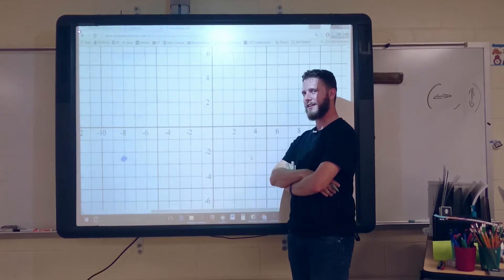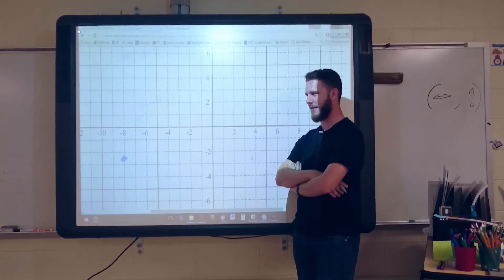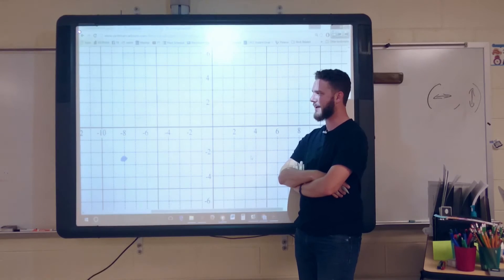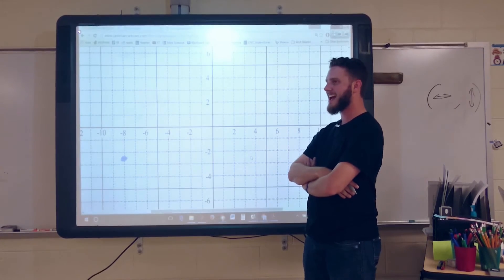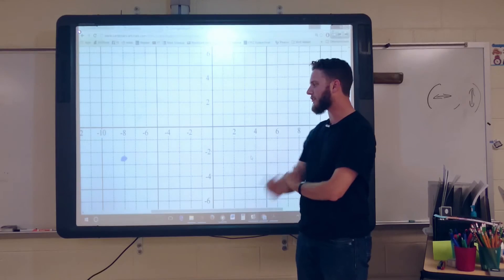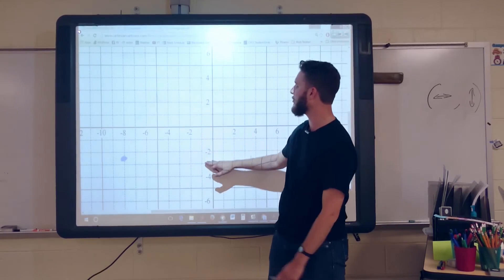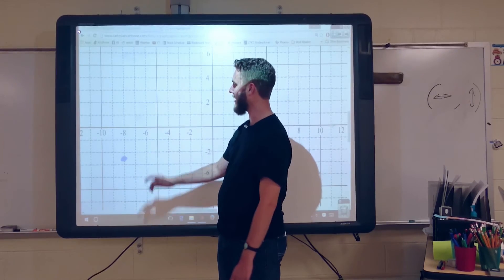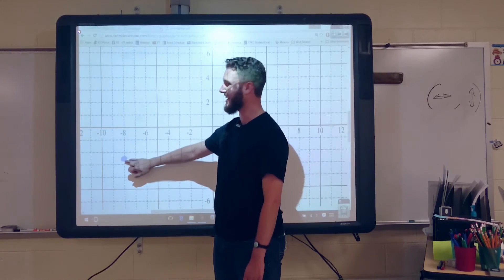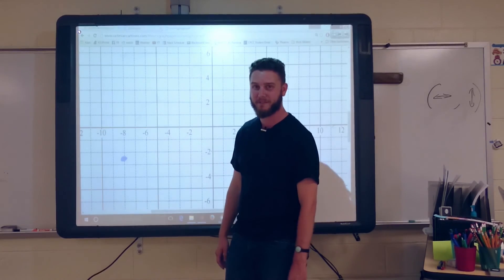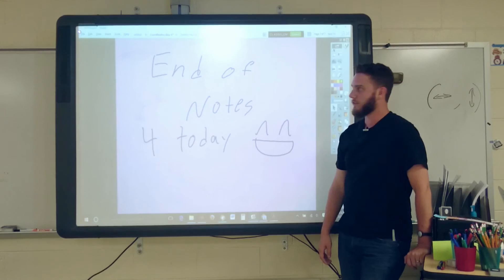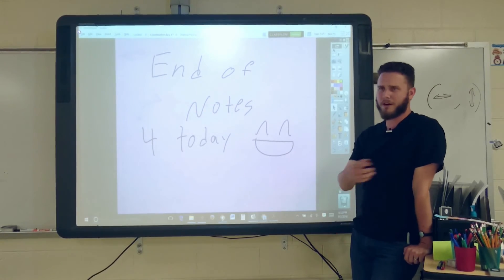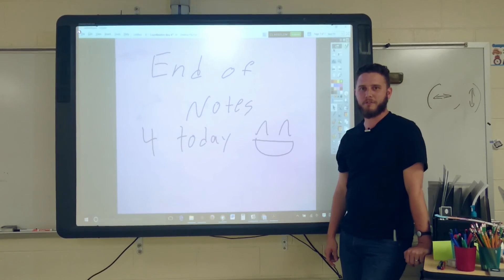Save the best for last - see if you can figure this one out. If you said negative eight, negative two you're close but not there. If you said negative eight, negative three, you're still close but still not there. The answer is negative eight and negative two and a half - I intentionally put the blue dot between the two and the three, so you had to read really carefully between the lines. Negative eight, negative two and a half, or negative 8, negative 2.5 - both work. End of notes for today, I'll be back with whatever we're covering next. This is Mr. A, have a nice night.